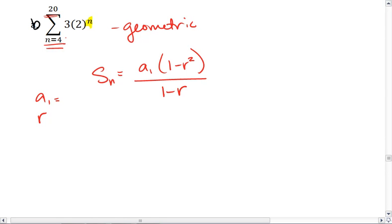We figure out a₁ by plugging in 4, so we get 3 times 2 to the 4th, which gives us 48. And r is our common ratio, which is the base of our exponent, in this case 2.